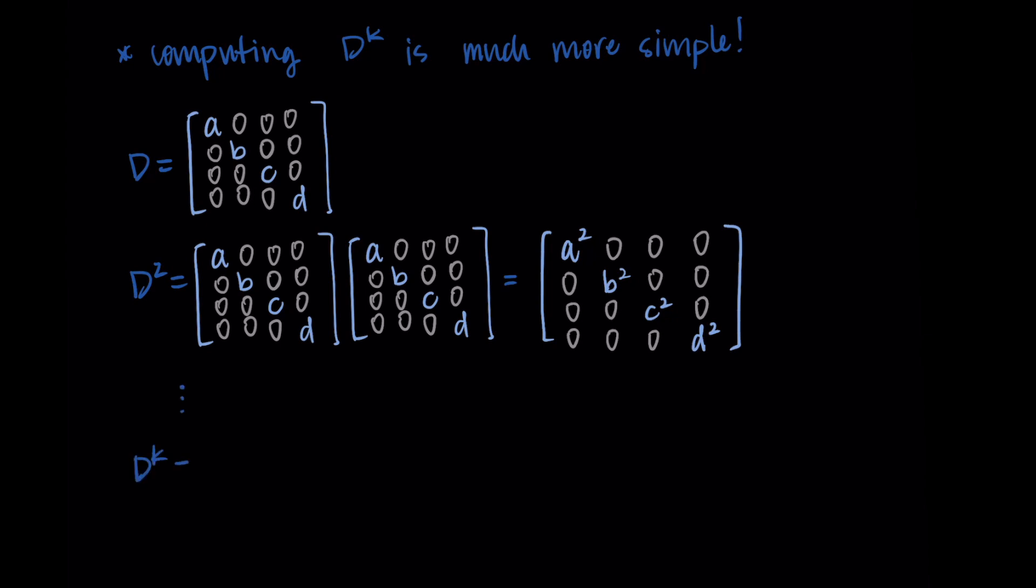You can imagine as we continue to multiply D by itself, when we get to D to the kth power, all we're needing to do is raise the elements on the diagonal to the kth power as well. We'd have A to the k, B to the k, C to the k, and D to the k on the diagonal.